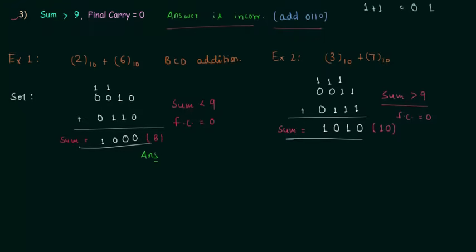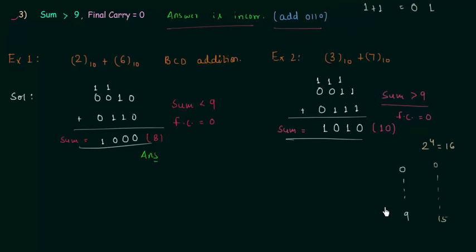Why are we adding 6? In the last presentation I told you we use BCD code to represent decimal digits, and decimal digits are from 0 to 9. We use 4-bit binary numbers to represent decimal digits, and for 4 bits we have 16 possible combinations — meaning we can represent 0 to 15. But we are representing only 0 to 9, so the number of invalid cases is 15 minus 9, which equals 6. So whenever the sum is greater than 9, we have to add 6 to make it valid.